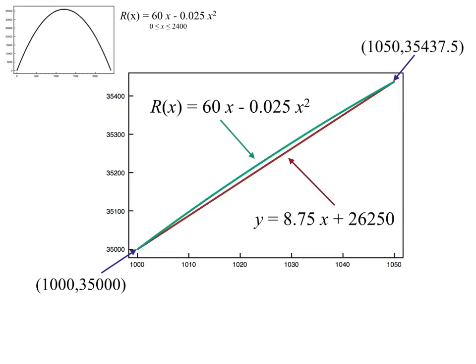And then up at the top there, when we get to 1050 car seats, we know that we're generating $35,437.50 of revenue. So, of course, if we have two points, we could clearly find the equation of that line. And that's how we got y there. That red line is equal to 8.75x plus 26,250.